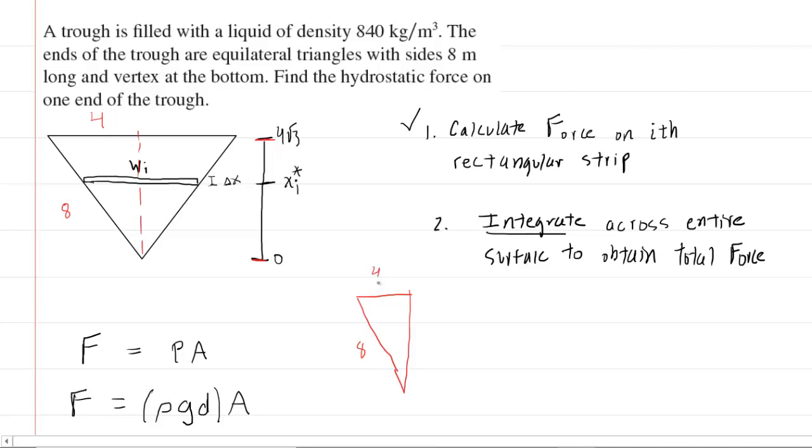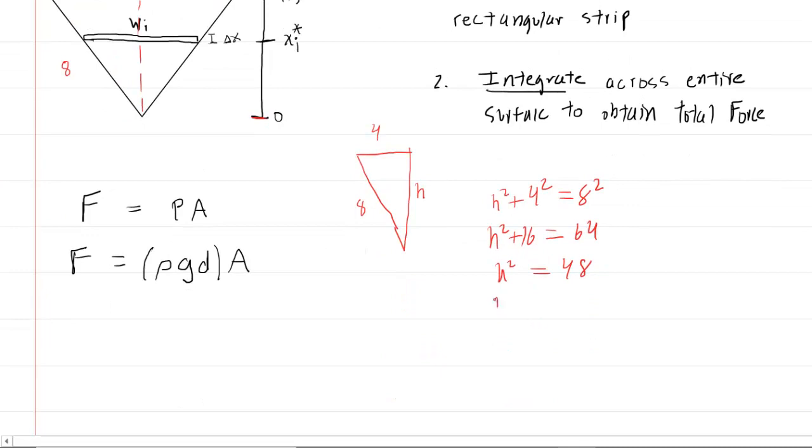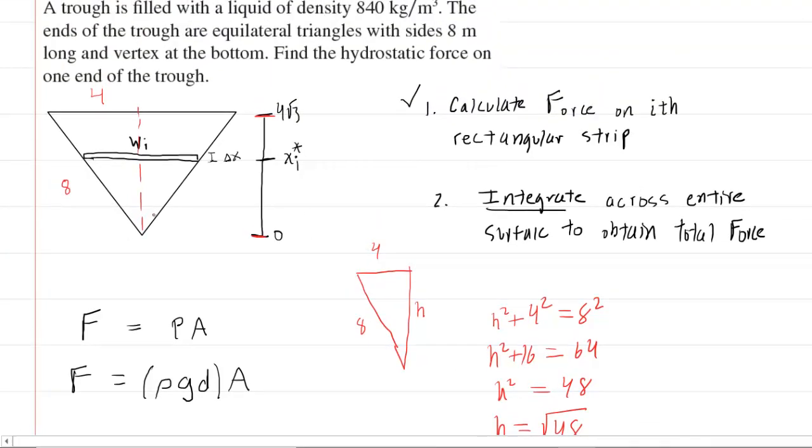So this is eight, this is four. We'll just call this h for now. And we can see that h squared plus four squared would equal eight squared. So then h squared plus 16 equals 64, h squared would equal 48 if you subtract 16 from both sides there. And then square root, you get radical 48, and of course we can rewrite that as radical 16 times radical three. The square root of 16 is four. So we definitely get four radical three for the entire height of this isosceles triangle.